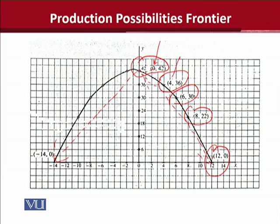Using different values of x, we can get corresponding values of y, and these points help us draw a more precise production possibilities frontier. As we know, in the real world relationships are realistically speaking usually non-linear, and this is how a quadratic function helps us model the production possibilities frontier.